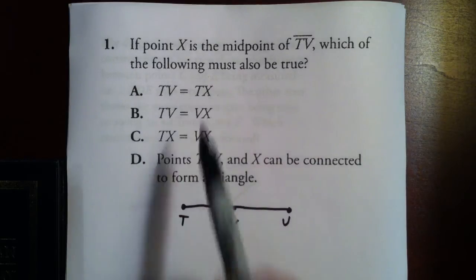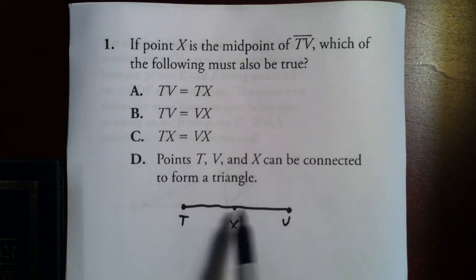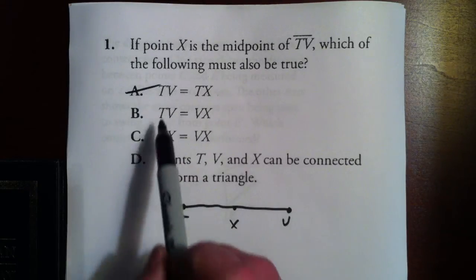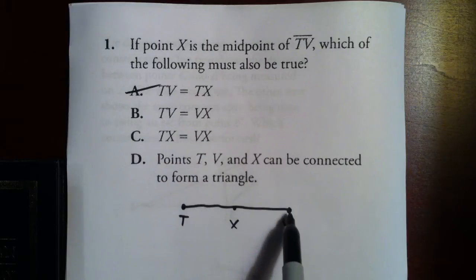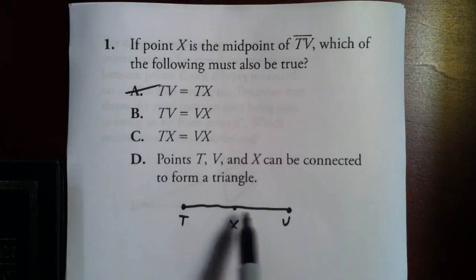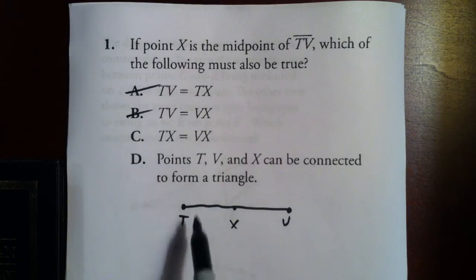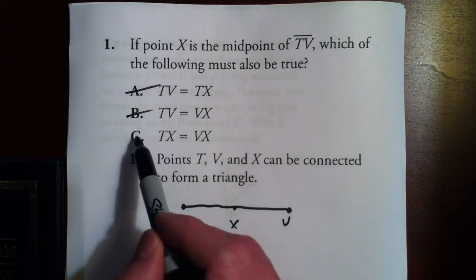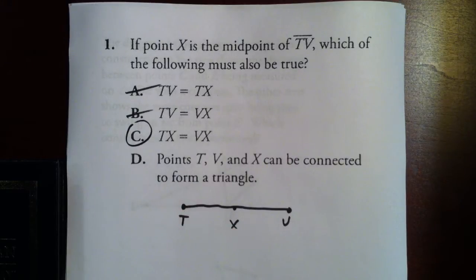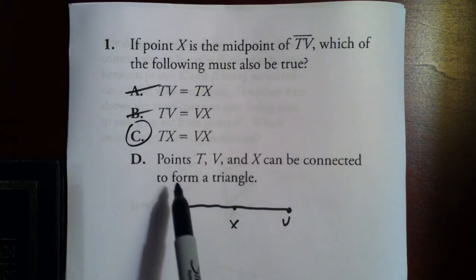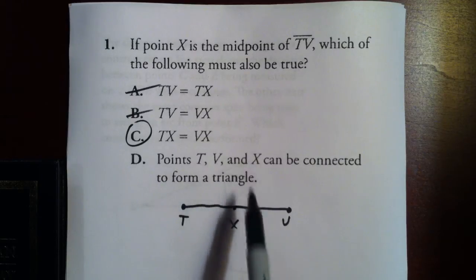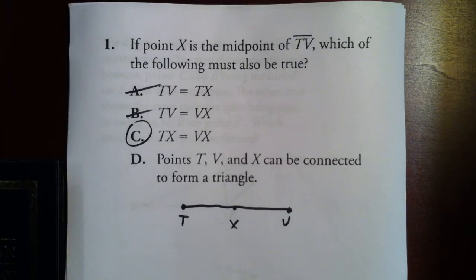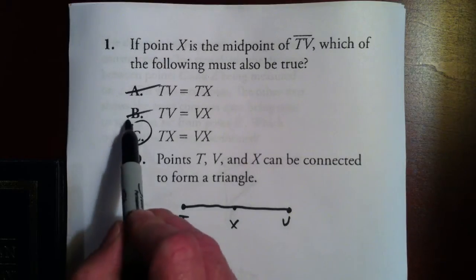TV equals TX? I don't think that's true, so we can eliminate choice A. TV equals VX? That's not true either, so we can mark that one out. TX equals VX — that may be a winner, so let's circle that one. And choice D says points T, V, and X can form a triangle. We've already connected these points and they obviously don't make a triangle, so your answer is C.